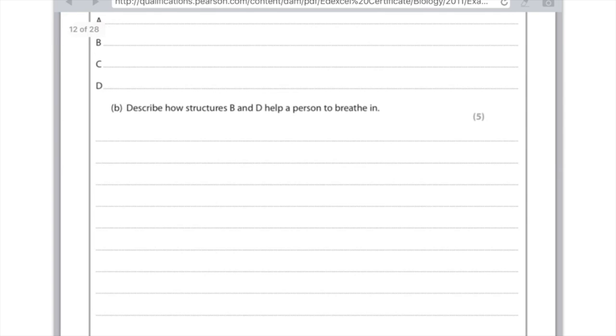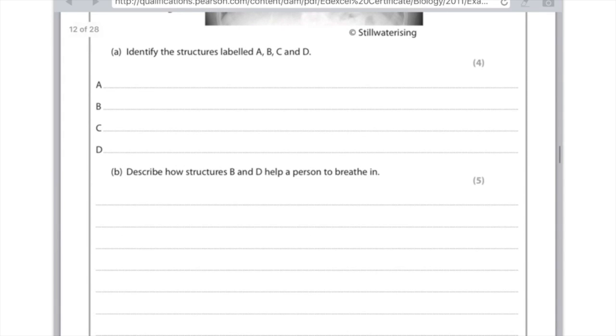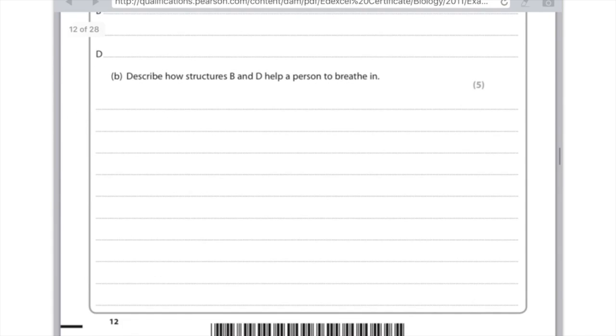Describe how structures B and D help a person to breathe in. So we're talking about the ribs and the diaphragm. So when we're breathing in remember that the diaphragm contracts which means that it flattens. The ribcage moves up and out and what that means is together they increase the volume inside the thorax. By increasing the volume you're decreasing the pressure and what that causes is air to be sucked into the thorax. So for the first mark the diaphragm contracts. Second mark it flattens. Third mark the ribcage moves up and outwards. Fourth mark the volume inside the thorax increases. And fifth mark there's a decrease in the thorax pressure.